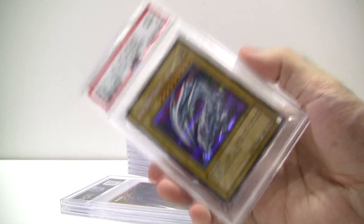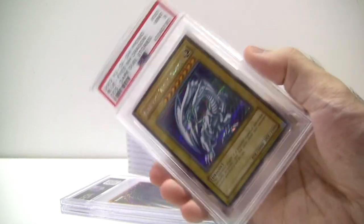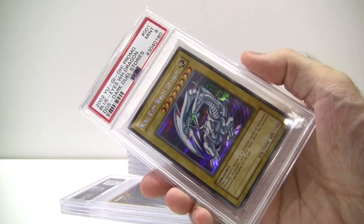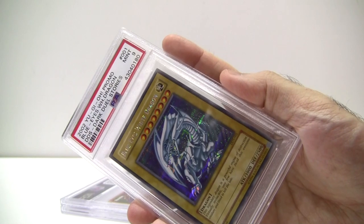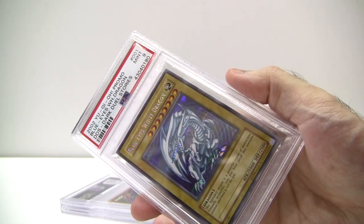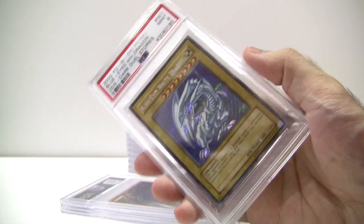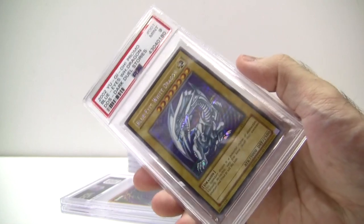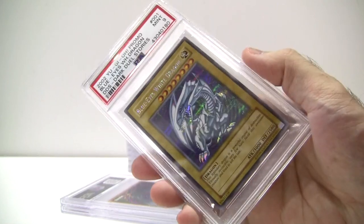This is the card that most collectors want in their collection. For those who don't know, as the name implies, this card along with the Dark Magician and Exodia came bundled together with the Game Boy Color game Dark Duel Stories, but only in the first printing. Later editions came with a different set of cards.